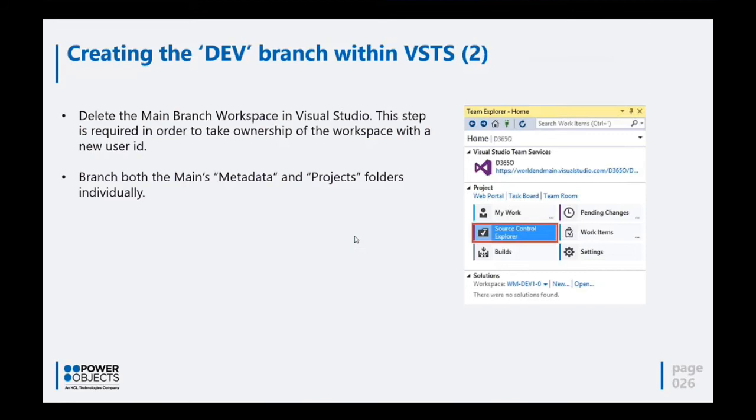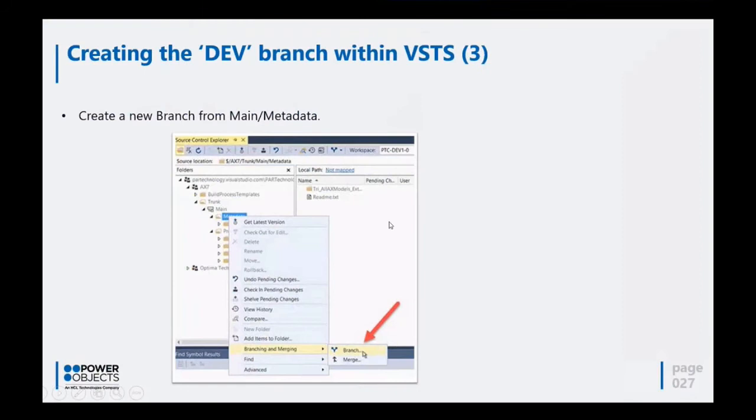You will create and branch from the main branch to create a new Dev branch. The way you do it is to go into your main branch metadata folder, right-click, and then click Branch. The main branch at this point will be your parent branch because you are creating a child branch from it. So Dev will be your child from main, and you can then release code very easily through this hierarchy.